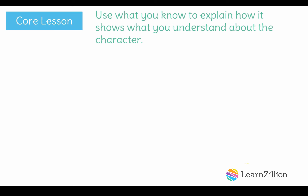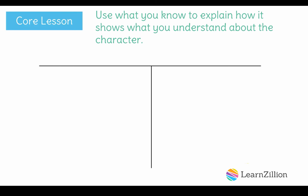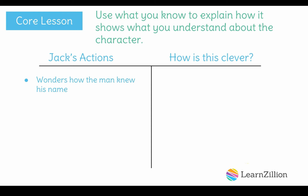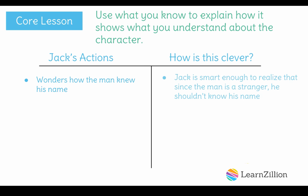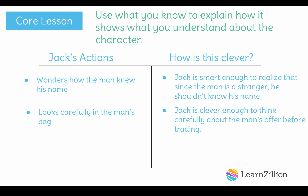The last step is to use what you know to explain how it shows what you understand about the character. I am going to organize my thoughts into the T-chart, which has two sides: Jack's actions and how is this clever. I'll add the first detail on the left: wonders how the man knew his name. Jack realized that the man was a stranger and he shouldn't have known his name. Then I'll add the detail from the illustration where Jack looks carefully into the bag. This shows that Jack is clever enough to take his time and think carefully about the man's offer before trading.